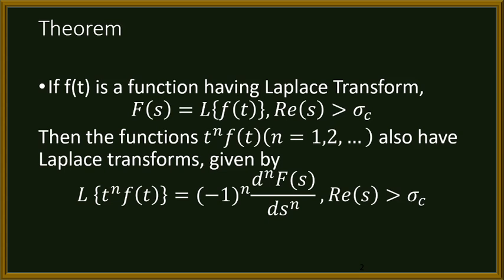The theorem states: if f of t is a function having a Laplace transform F of s, where the domain of s is the real numbers, then the functions t to the n times f of t, where n equals 1, 2, 3, and so on, also have the Laplace transform given by: the Laplace transform of t to the n times f of t equals negative 1 to the power of n, times the nth derivative of F of s with respect to s, where the domain of s is the real numbers.